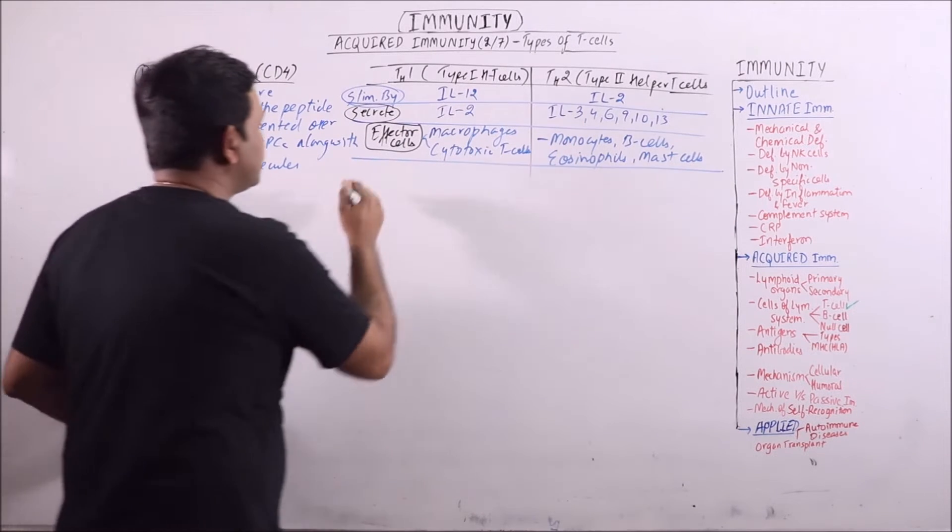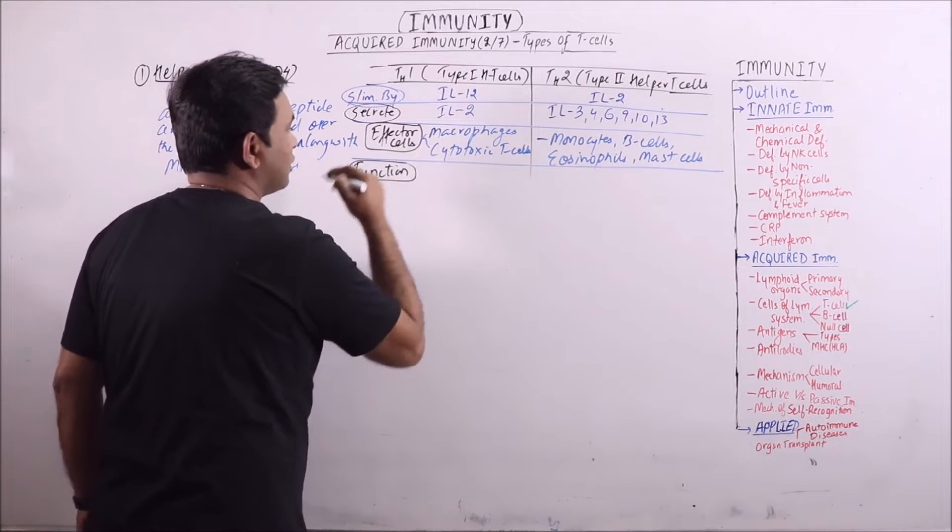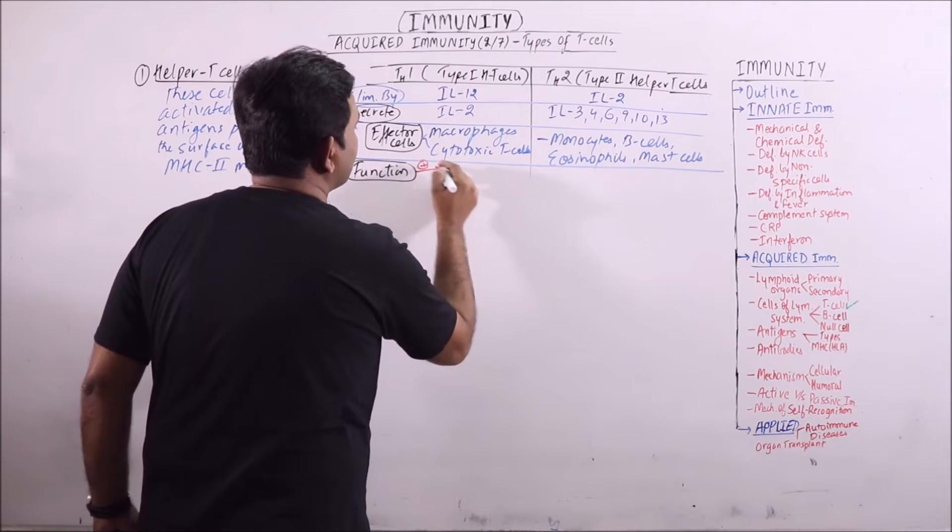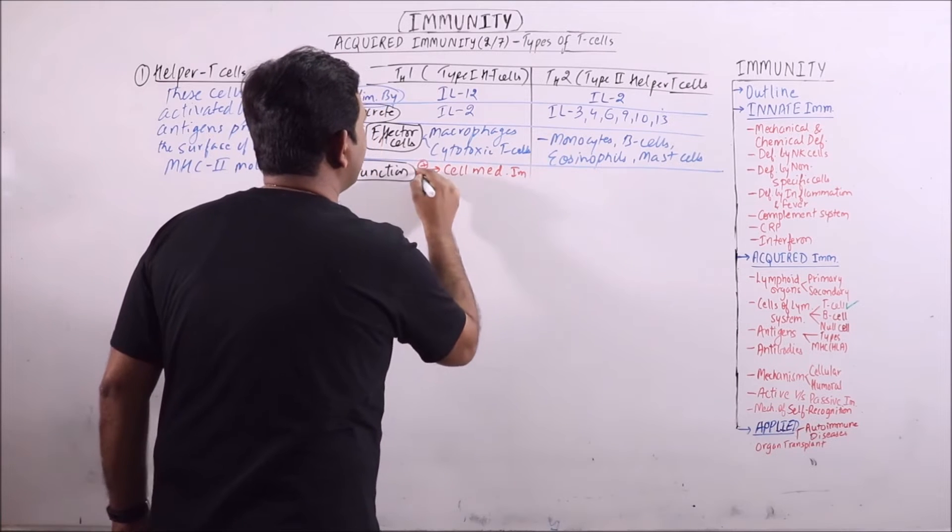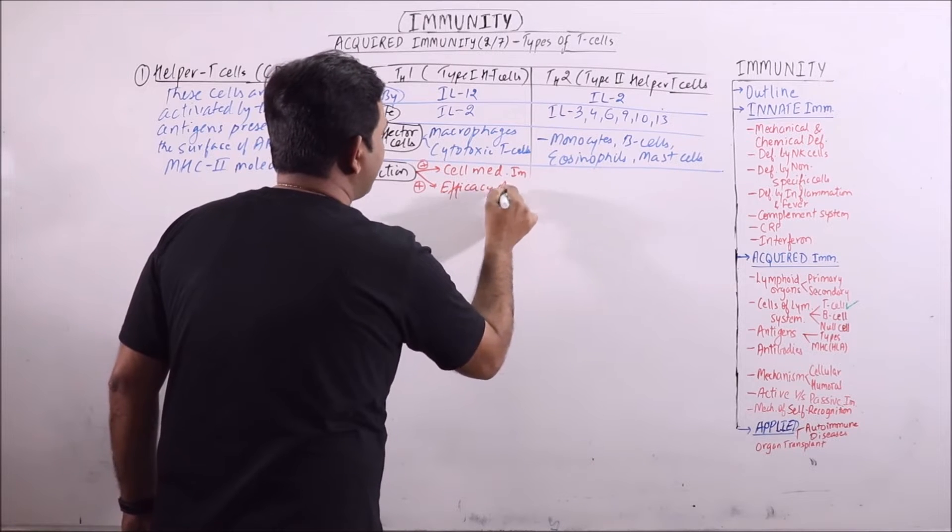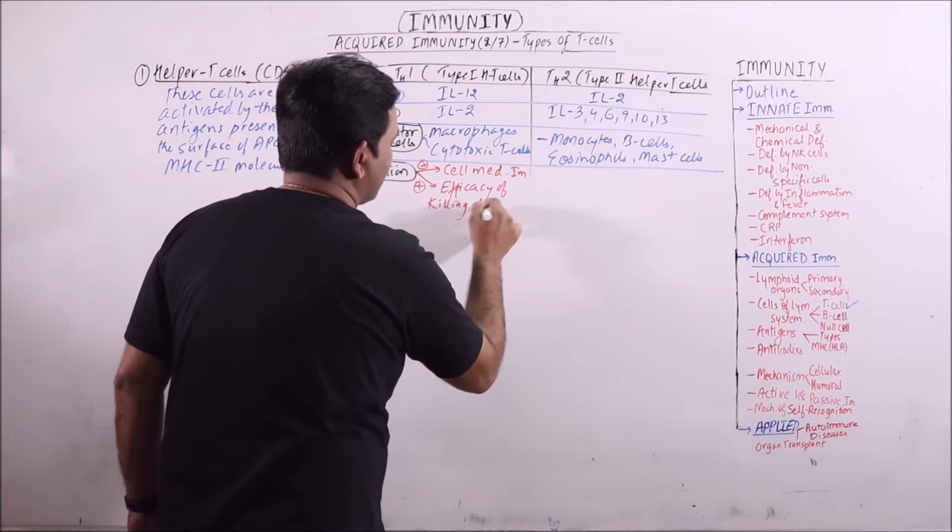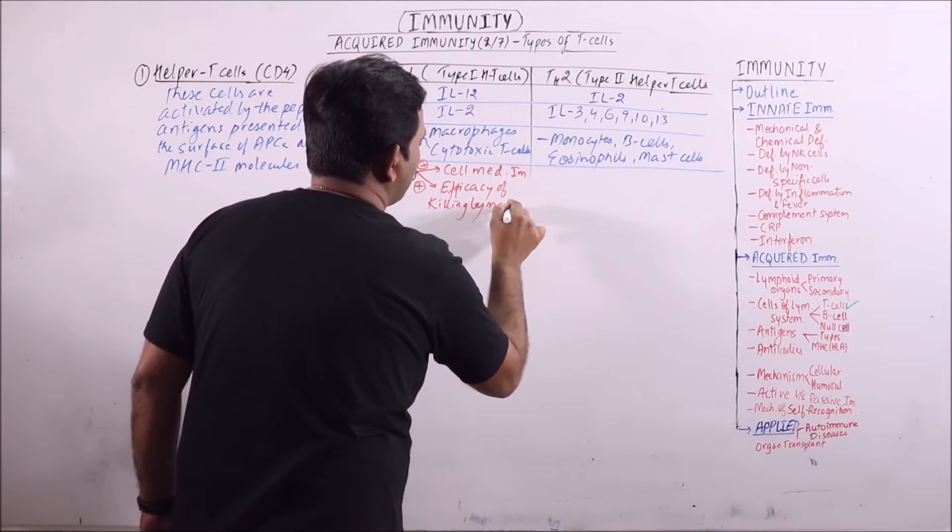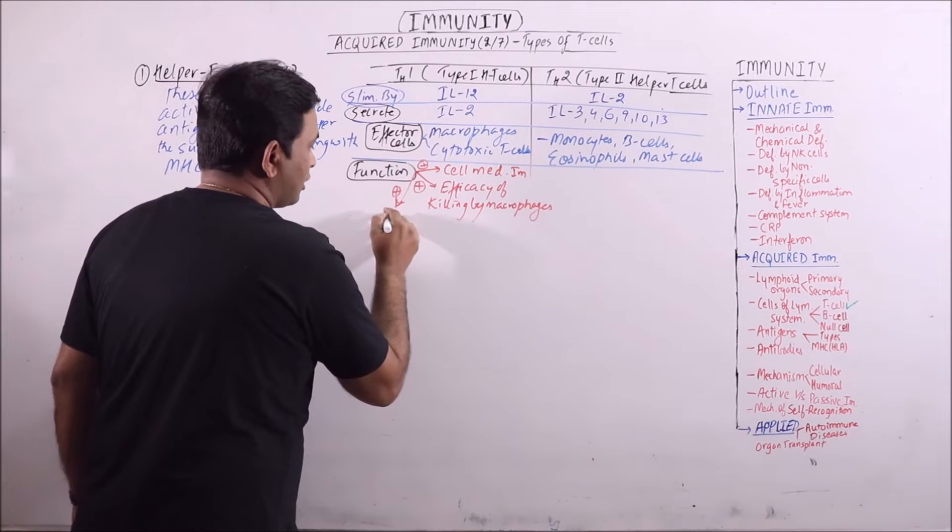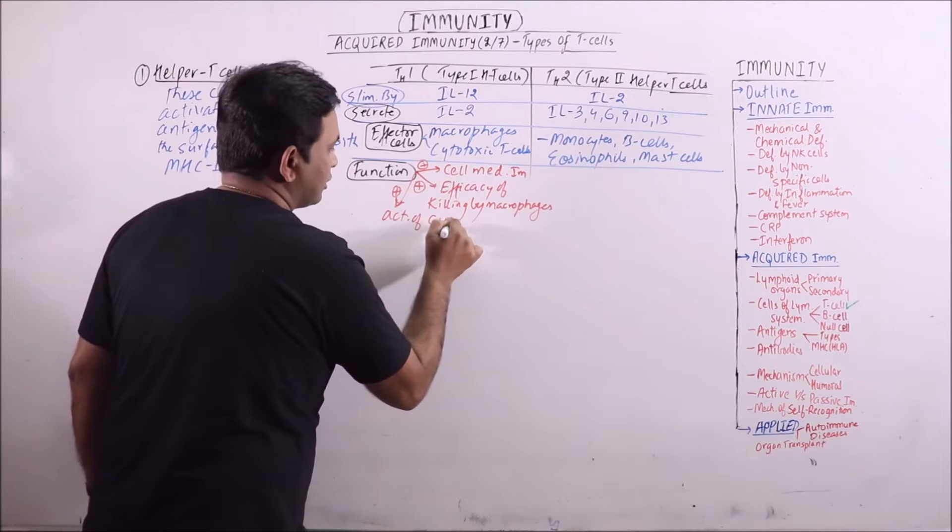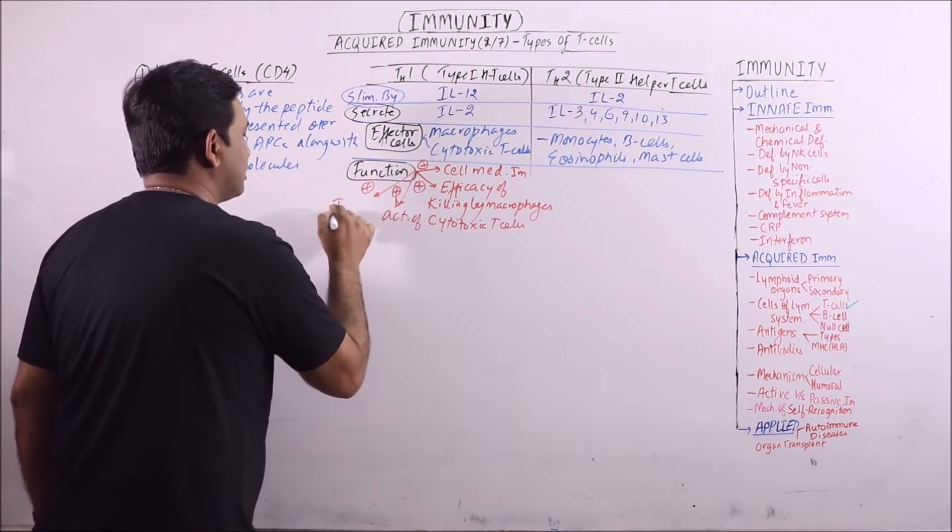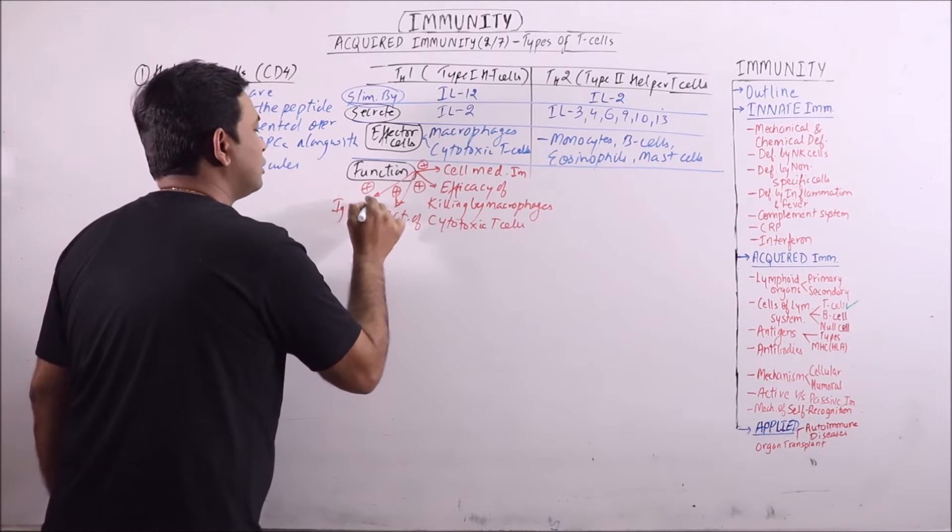The main function of Th1 is to stimulate cell mediated immunity, to activate the efficacy of killing by macrophages, to promote the activity of cytotoxic T-cells, and also it promotes the immunoglobulin production.